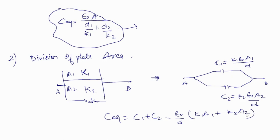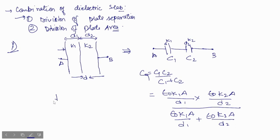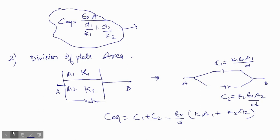This is a generalized equation. If they are divided into N terms with areas A1, A2, A3, A4, and so on, the equivalent capacitance will be C_eq = (ε₀ / D) × (k1·A1 + k2·A2 + k3·A3 + k4·A4 + ...). Similarly, for case 1, if divided into N plate separations D1, D2, D3, D4, up to Dn, the equivalent capacitance is C_eq = ε₀A / (D1/K1 + D2/K2 + D3/K3 + D4/K4 + ... + Dn/Kn).